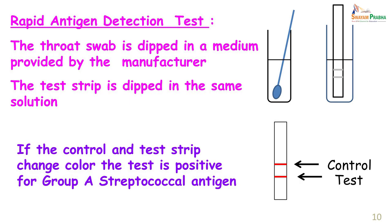So what rapid tests can we do? We can do the rapid antigen detection test. In this test the throat swab is dipped in a medium provided by the manufacturer, after which a test strip is dipped in the same solution. We look at the test strip to see whether the control and test bands have appeared. If both have appeared, it means the sample was positive for group A streptococcal antigen. This is a very specific test but not so sensitive, and therefore it becomes necessary to also cultivate the organism.